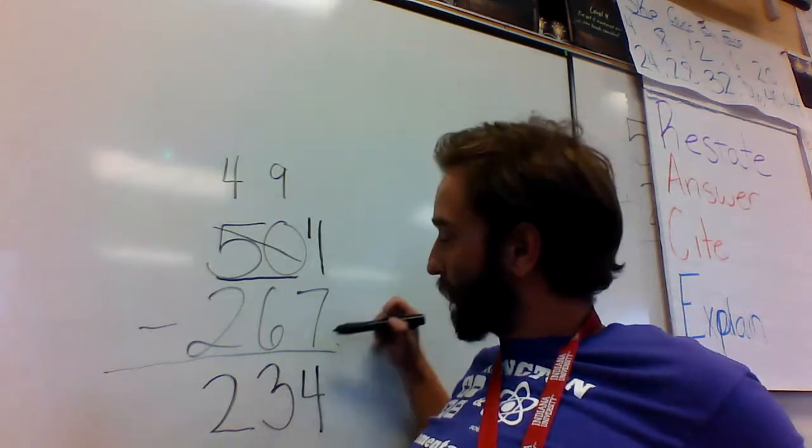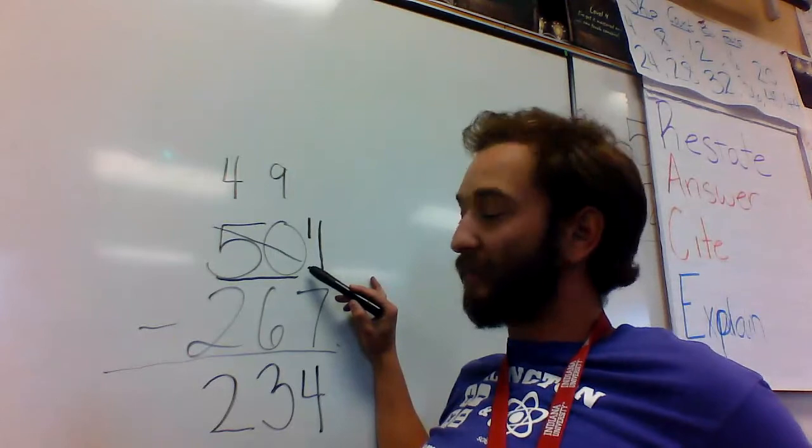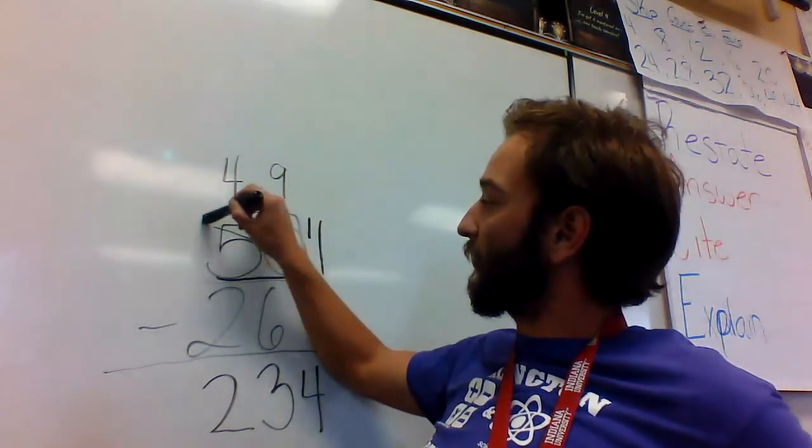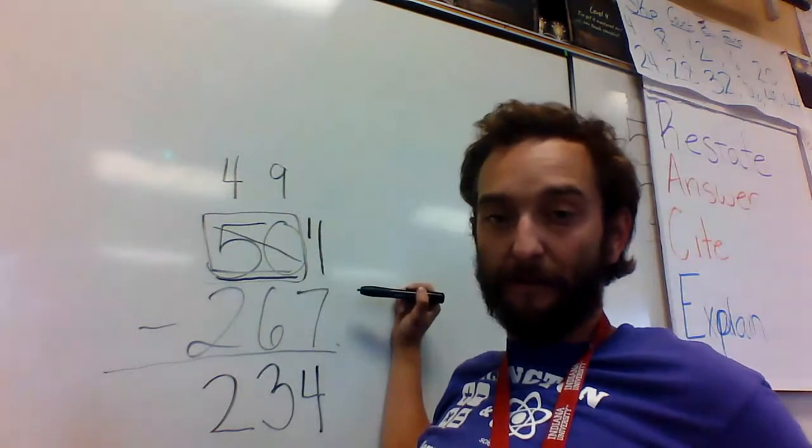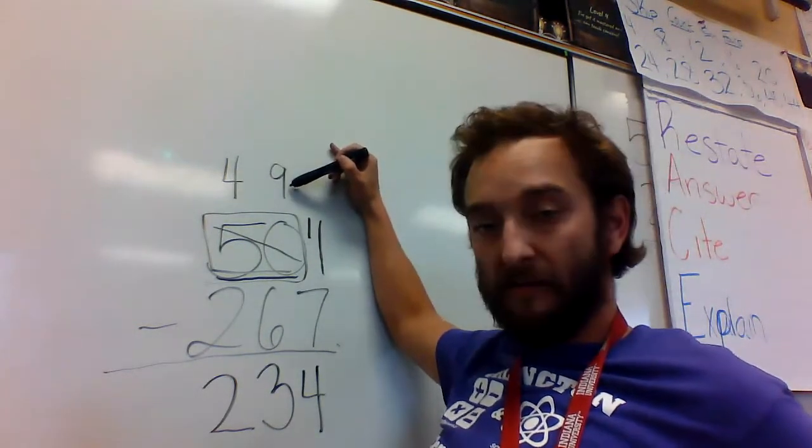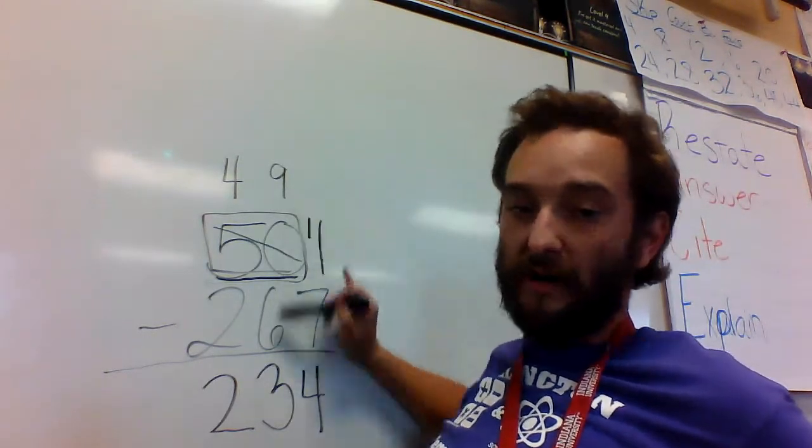So again, bottom number is bigger, I borrow. But if I run into a tens place with a 0, then I'm going to borrow from the hundreds and the tens together, which is 50. Take 1 away from 50: 4 and a 9. Move the 1 over here, make it 11, subtract down.